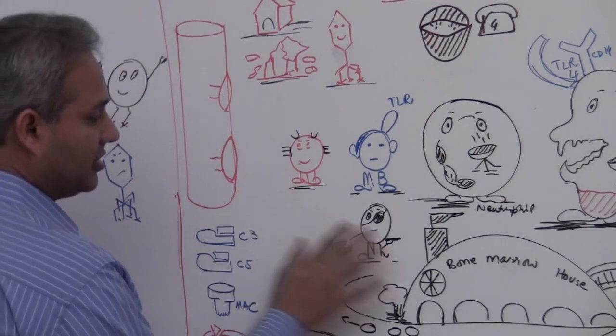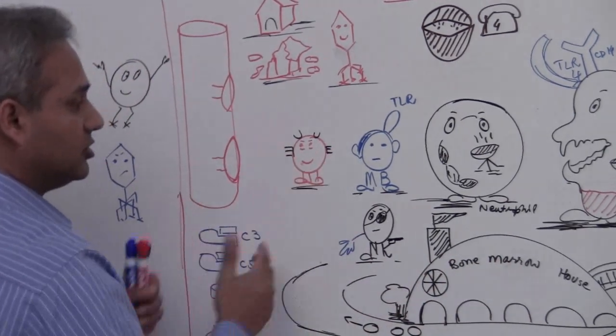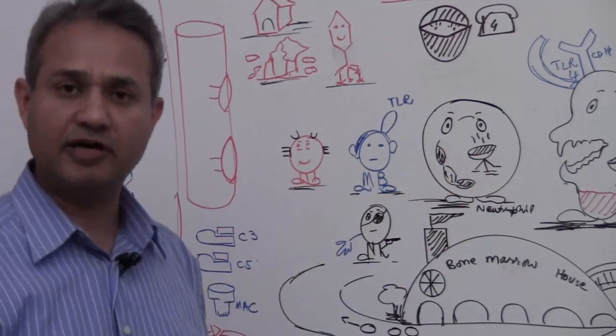Natural killer is holding a gun and he's going to attack anything which he finds with his hand which seems abnormal. Then, if you see here, out of the bone marrow comes the leukocytes. Leukocytes are white blood cells.